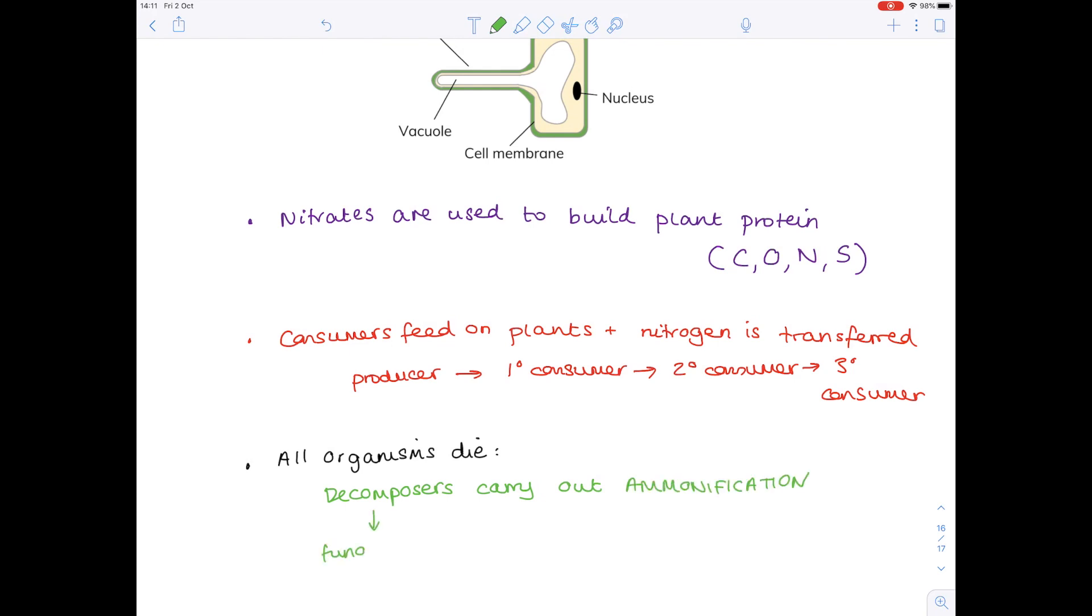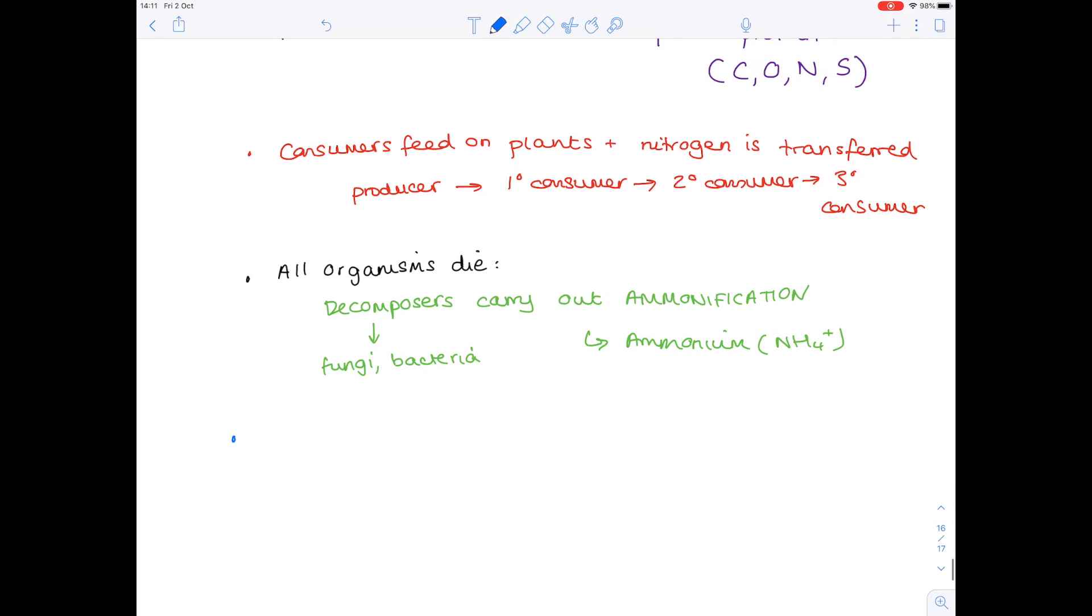Those decomposers, by the way, include things like fungi and bacteria, and in the end they're going to produce ammonium, which is NH4+. The next step is super important because what happens at this point is that that ammonium gets converted first into nitrites and then into nitrates. So I'm just going to add their formulae here. This is carried out by a special group of bacteria known as nitrifying bacteria, and as such this process is known as nitrification.